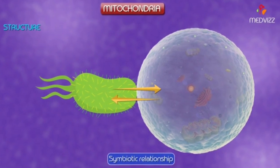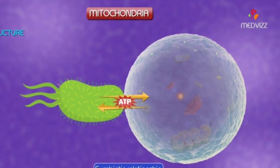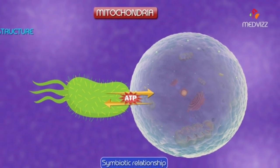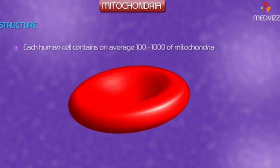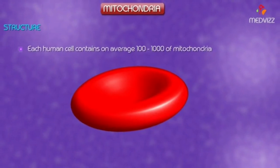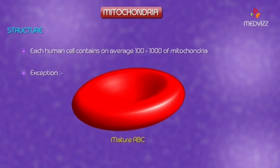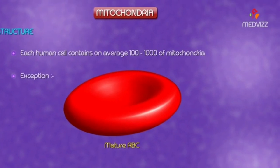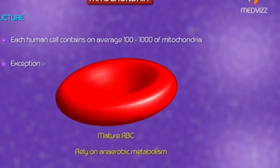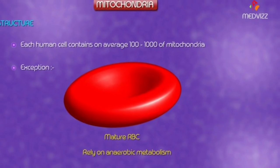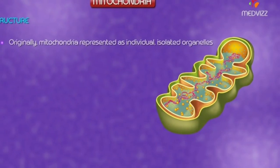This endosymbiotic hypothesis is not universally accepted and has been challenged. Each human cell contains on average 100 to 1000 mitochondria. The exceptions are mature red blood cells, which rely exclusively on anaerobic metabolism and contain no mitochondria.